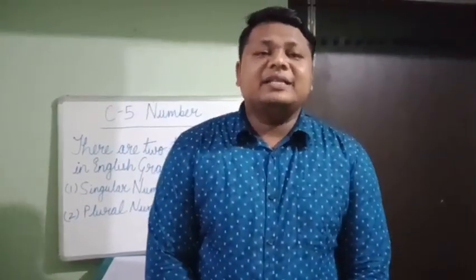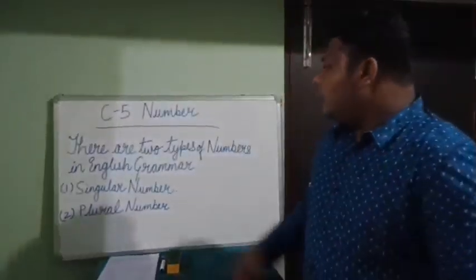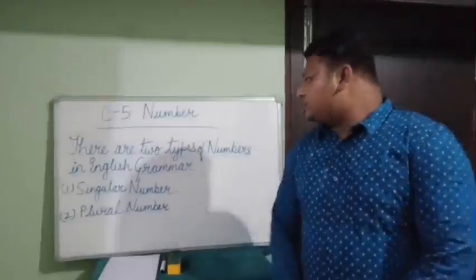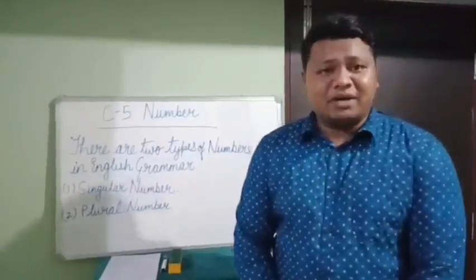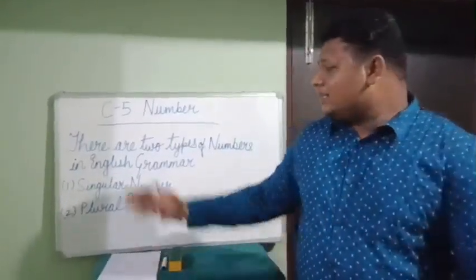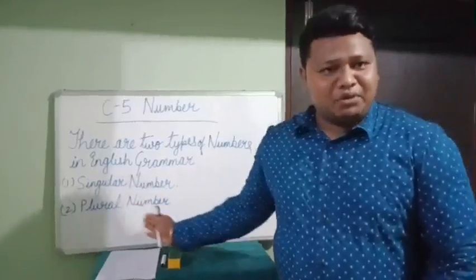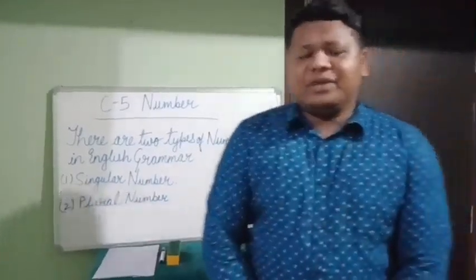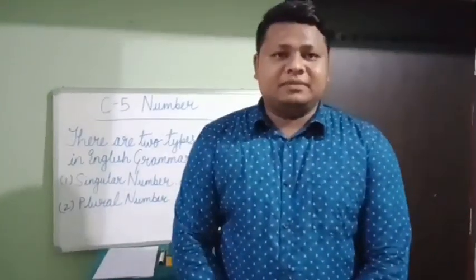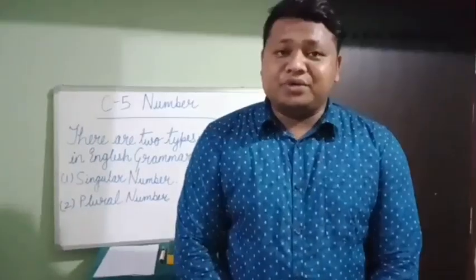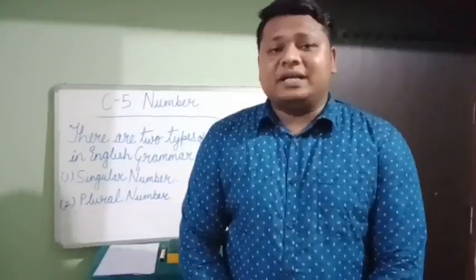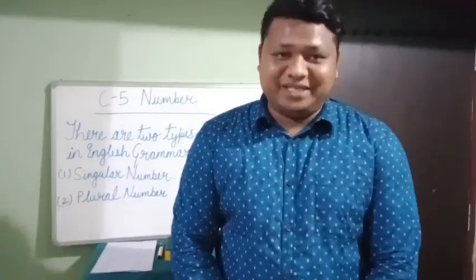Very good morning to all the students. Today we are going to do lesson 5 of your grammar book, that is Numbers. There are two types of numbers in English grammar: singular number and plural number. You are familiar with these two words, and today we are going to read about singular and plural in more detail.